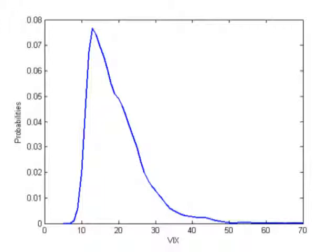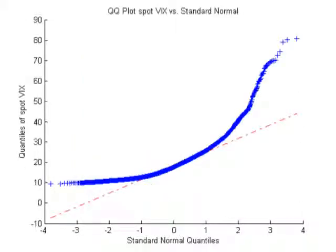In this post we are going to look at some statistical properties of the spot VIX index. We use data from January 1990 to May 2017.